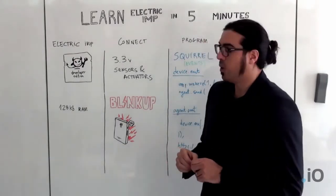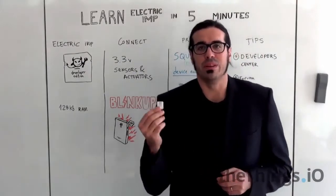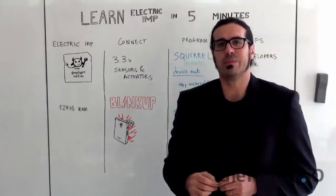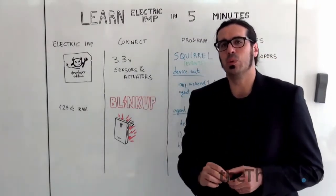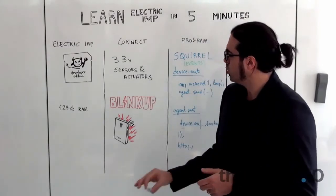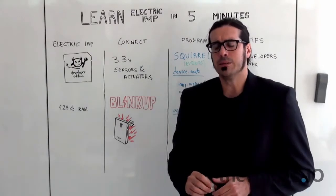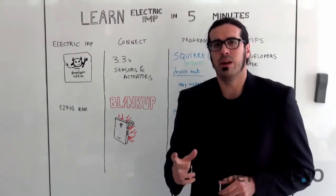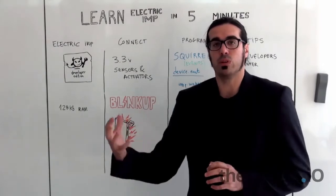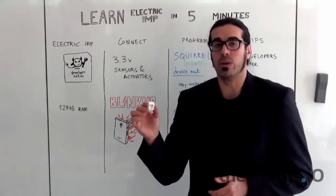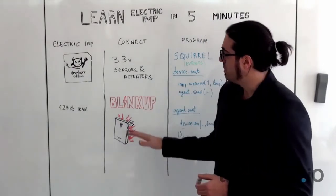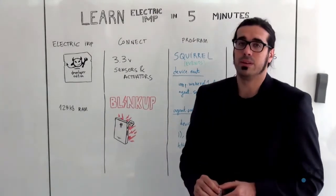So for connecting to the Wi-Fi you need to blink up the ElectricIMP. And what does it mean to blink up the ElectricIMP? This is a very cool process that you have to use. So you need a mobile phone, Android or iOS I think, and you need to download the mobile application of ElectricIMP. There with the mobile phone connected to the Wi-Fi where you want to connect your ElectricIMP you need to blink it up.